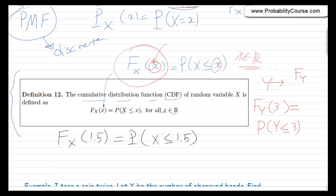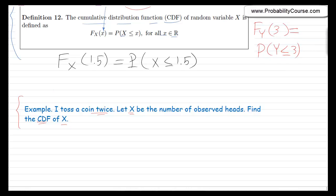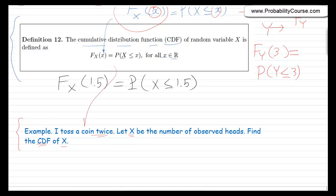To better understand this, let's look at an example. I toss a coin twice and define the random variable x as the number of observed heads. The coin is unbiased — it's a fair coin — and the coin tosses are independent. I want you to find the CDF of x. I suggest you use the definition to find the CDF before watching the rest of the video.